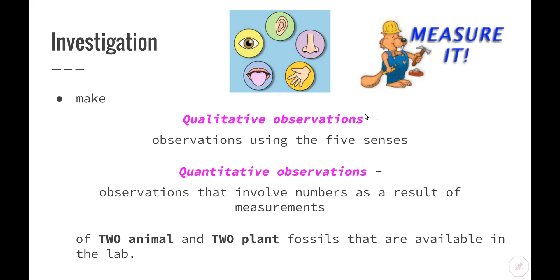You also need to make quantitative observations, which involve numbers as a result of measurement — such as the length, width, or diameter of different fossils. You have to examine at least four fossils: two plant and two animal. You'll then be asked to compare them to organisms that still exist today, particularly Australian organisms, and make comparisons between the fossilized parts and those organisms that exist today. That brings us to the end of this video — thank you for watching.